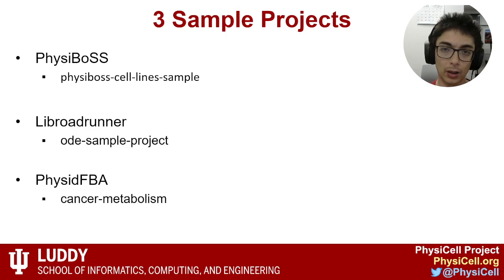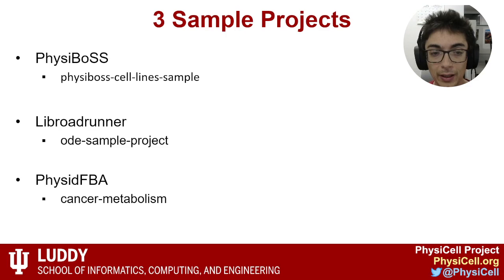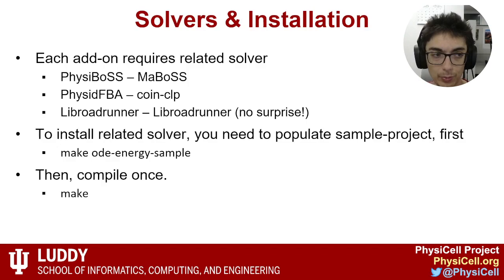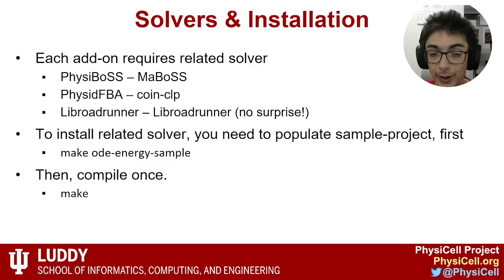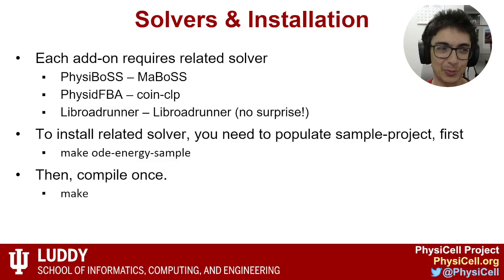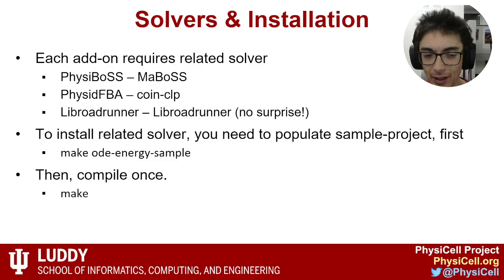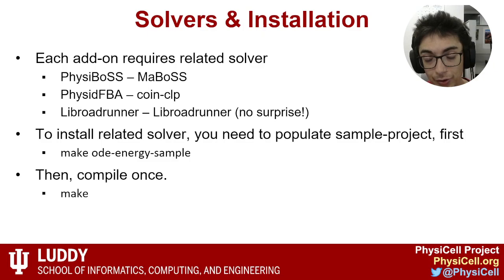The three sample projects are: the PhysiBoss cell line sample, the energy sample for LibRoadRunner, and cancer metabolism for PhysiDFBA. When comparing solvers: PhysiBoss uses MaBoSS, PhysiDFBA uses CoinCLP as an optimal linear programming solver, and the LibRoadRunner add-on uses LibRoadRunner — no surprise there. We will do the ODE energy sample, and we need to compile first because it will download the solver.